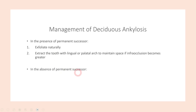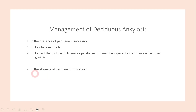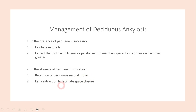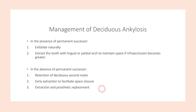If the permanent successor is not present at all — meaning even the tooth bud is absent in the mandible — we can go for retention of the deciduous second molar, as that is the most commonly encountered ankylosed tooth in clinical practice. Alternatively, we can perform early extraction of the deciduous tooth so that the space is available when other permanent teeth erupt. Finally, we can go for extraction followed by prosthetic replacement — such as a dental implant if the patient is over 18 years old, or a removable or fixed partial denture.